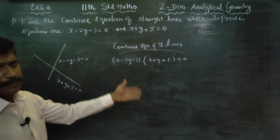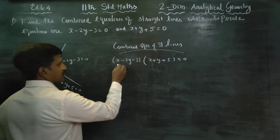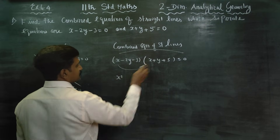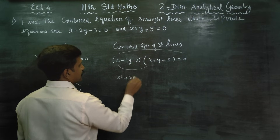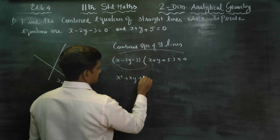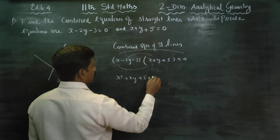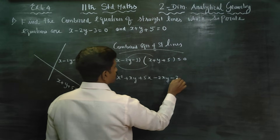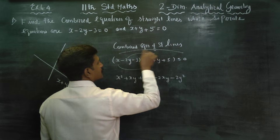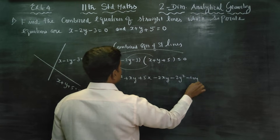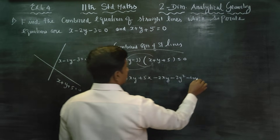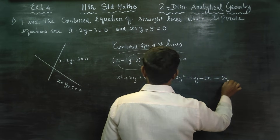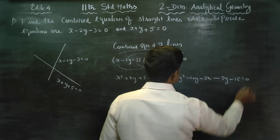We simply multiply the two equations. x into x is x squared; x into y is xy; x into 5 is 5x. Then, minus 2y multiplied: minus 2xy, minus 2y squared, minus 10y. Then, minus 3 multiplied: minus 3x, minus 3y, minus 15 is equal to 0.